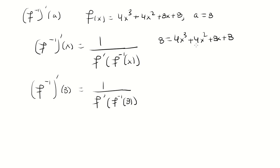The only thing that works here is when all of these terms are gone and you have 8 equals 8. That only happens when x is 0, so that means f of 0 is 8, or f inverse of 8 is 0. So that goes in here, we have 1 over f prime of 0.